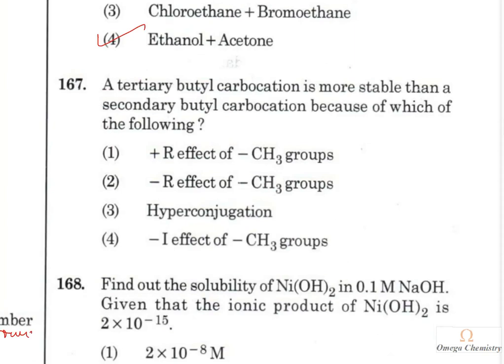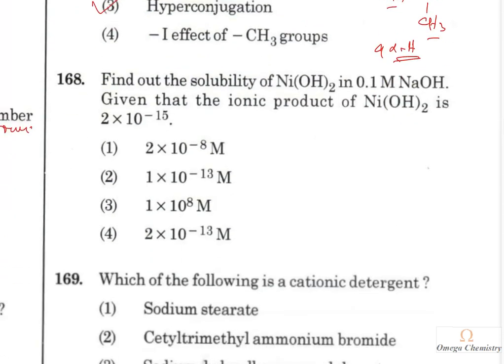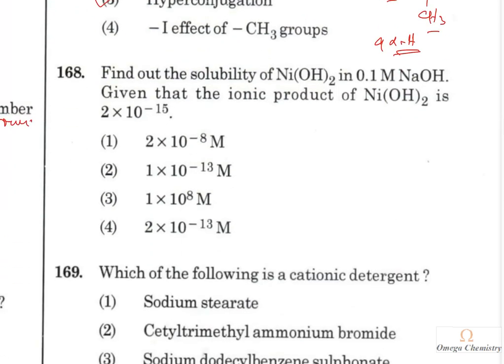Question 175: A tertiary butyl carbocation is more stable than a secondary butyl carbocation because the tertiary carbocation has 9 alpha hydrogens, leading to greater hyperconjugation. Hyperconjugation is the most important factor for stabilization of carbocations, and tertiary butyl carbocation is more stable even than a benzyl cation.